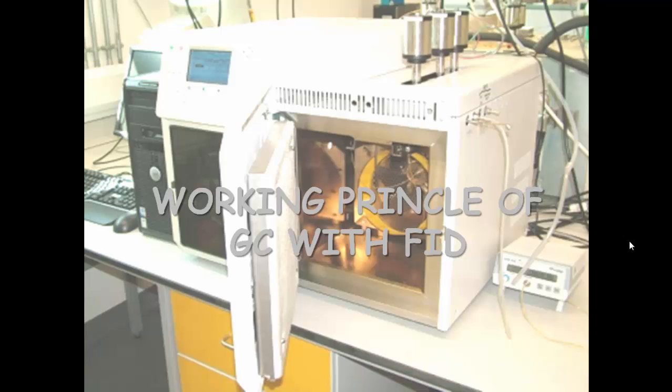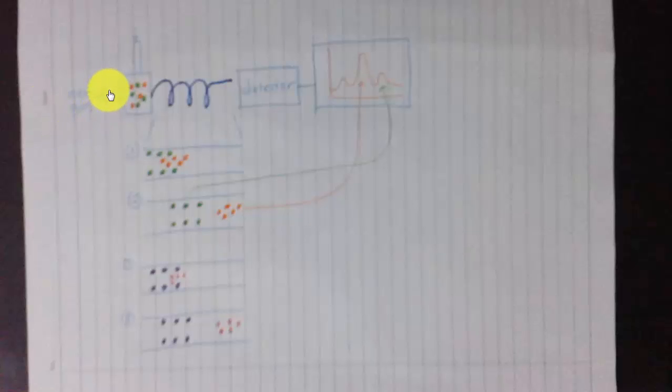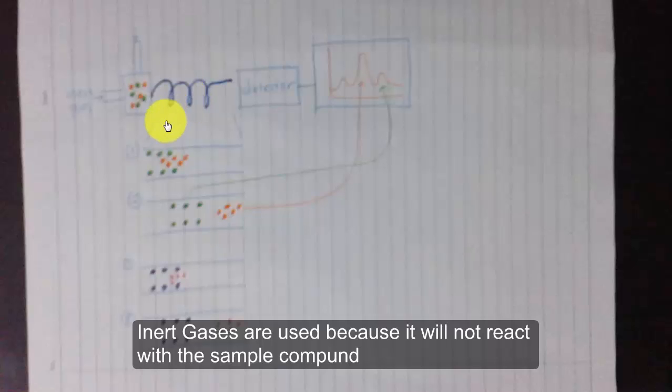I would like to explain the working principle of gas chromatography with FID using a drawing. This is where the sample compound is injected. The sample compound is evaporated into gas and stored inside the machine. For example, there are two types of compounds: the orange compound and the green compound. Inert gases are used to transport the sample compound through the column, as the sample compound cannot be transported by itself. After going through the column, it passes through the detector, which turns the reading into a readable graph called a chromatograph.